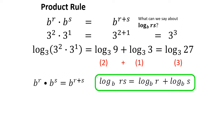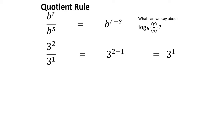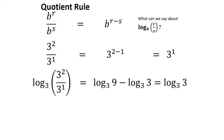The next property is the quotient rule. For exponents, b to the r divided by b to the s equals b to the r minus s. For logarithms: log base 3 of (9 divided by 3) can be broken into log base 3 of 9 minus log base 3 of 3, which is 2 minus 1, equaling 1.